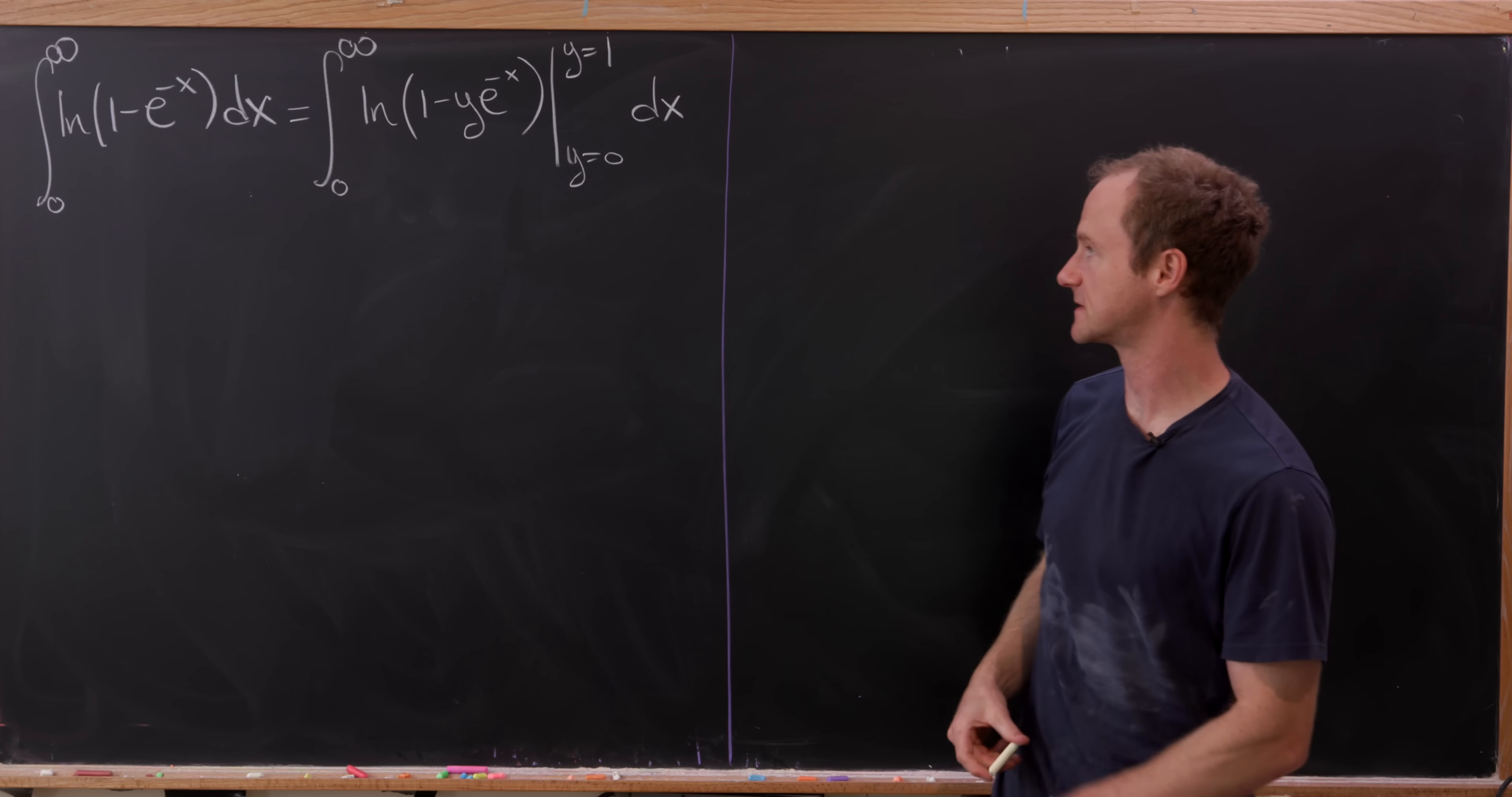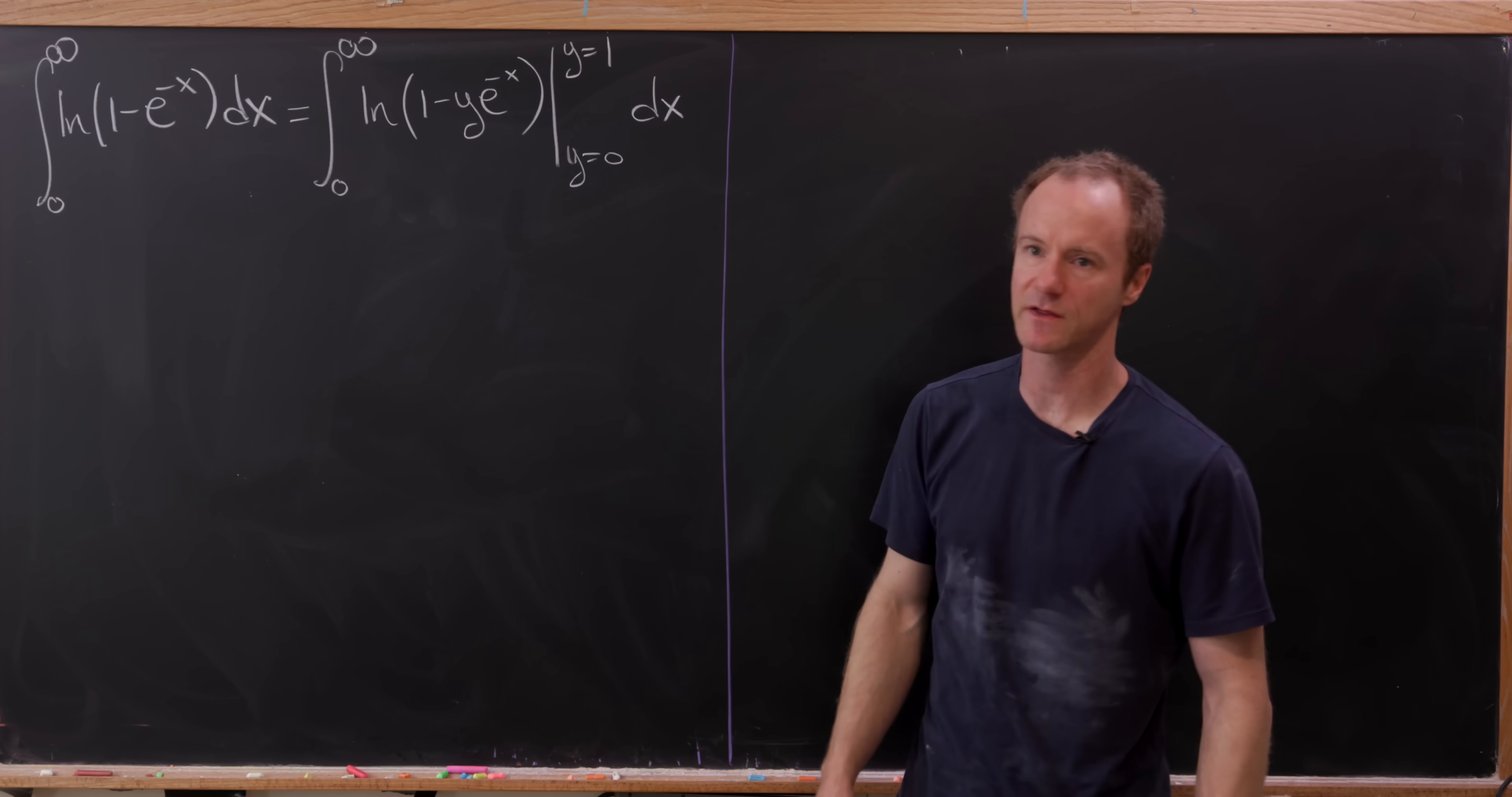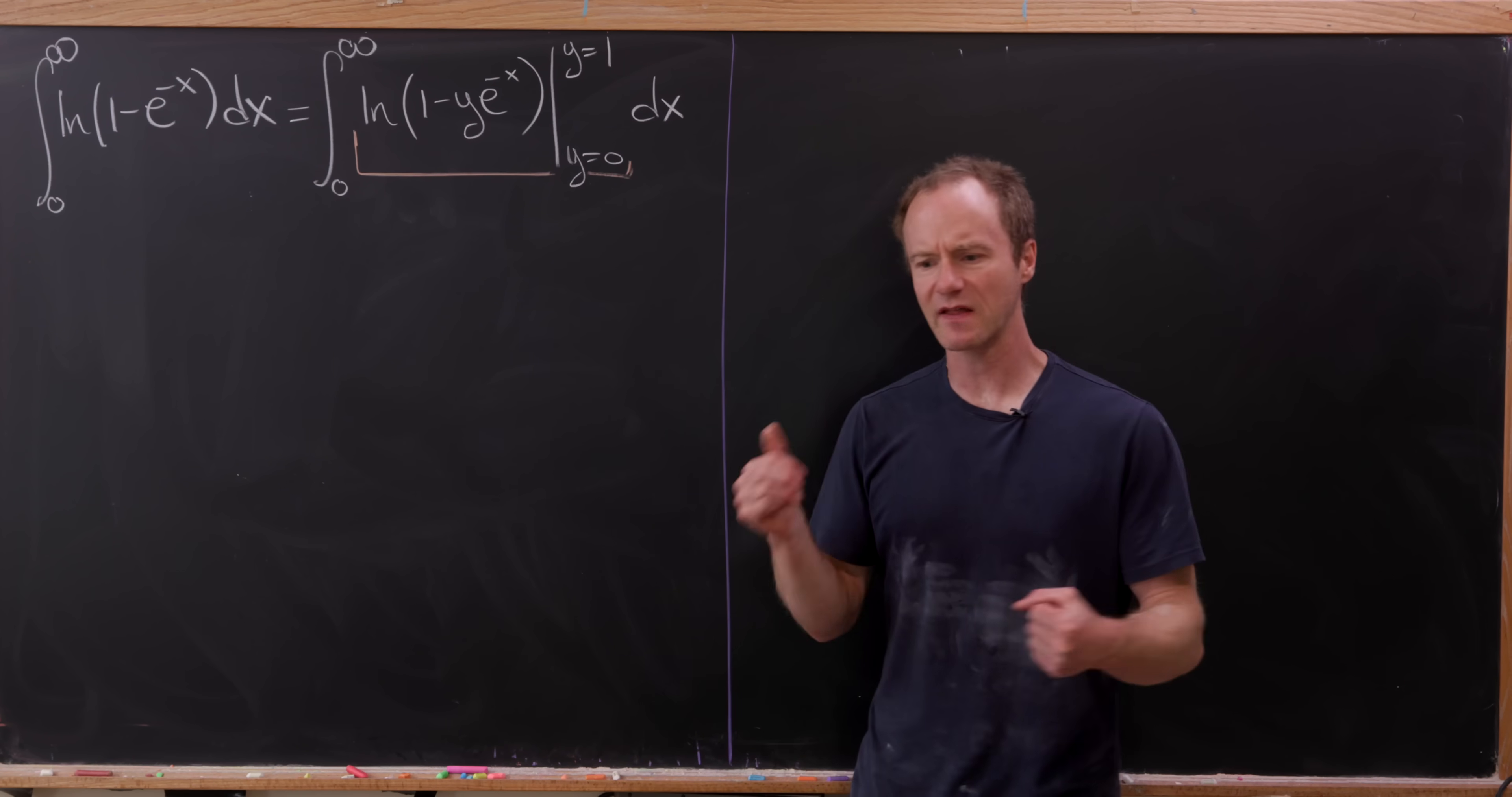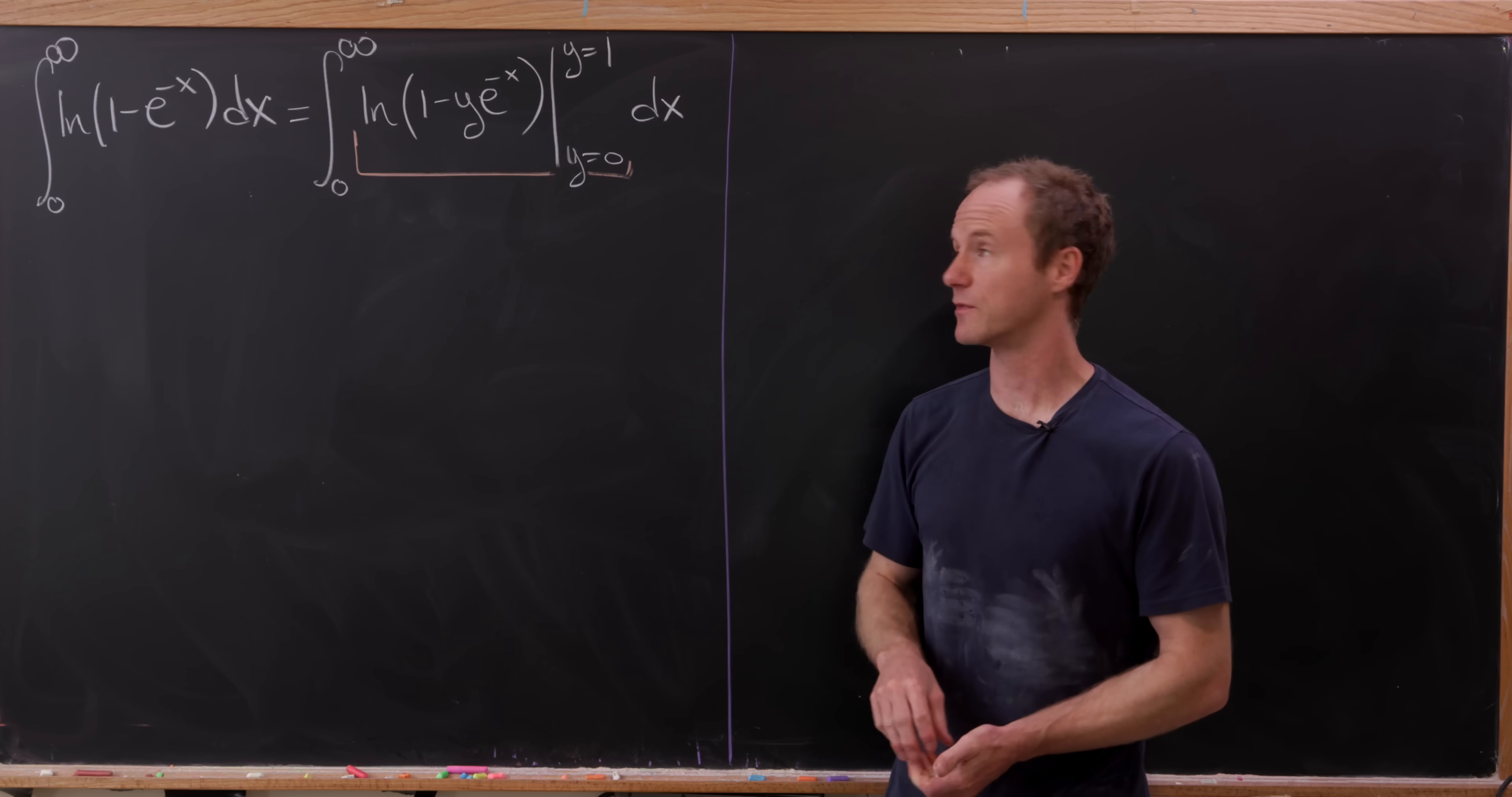Let's observe here that if we evaluate this at y equals zero, I have the natural log of one, which is zero. Evaluating it at y equals one gives us what we started with. What we want to do is think about this inside bit as what I like to call a zeroth integral. Evaluation at two points can be thought of as a zeroth integral, and then we can change that to a first integral via the fundamental theorem of calculus.